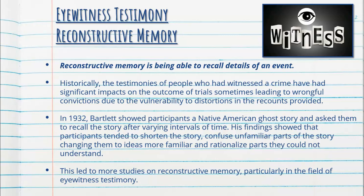Reconstructive memory, even though it is essential in giving evidence, is notoriously wrong. In 1932, Bartlett showed participants a Native American ghost story and asked them to recall it after varying intervals of time. The findings showed that participants tended to shorten the story or confuse unfamiliar parts, changing them to more familiar ideas and trying to rationalize parts they could not understand, making recall very inaccurate and inconsistent.